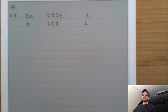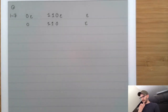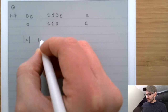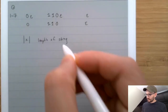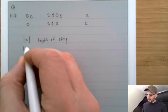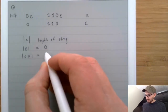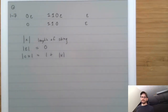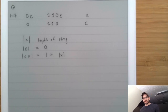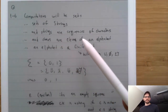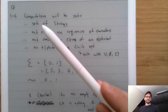Strings have different properties. One of their properties is their length. We write it as |string|. It's easy to define recursively: the length of ε is equal to 0, and the length of cx is equal to 1 plus the length of x. Now going back to our list: alphabet is a finite set, characters are elements of an alphabet, strings are sequences of characters, and computations are sets of strings.